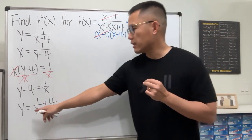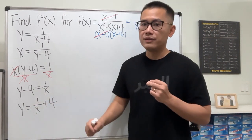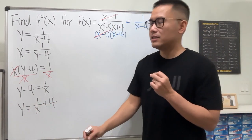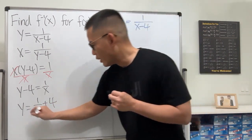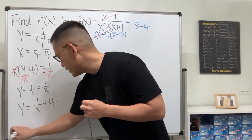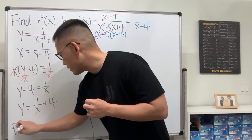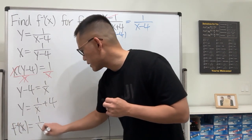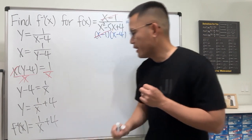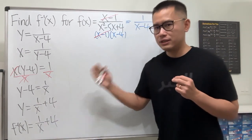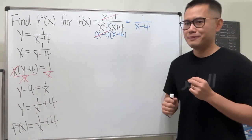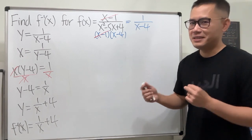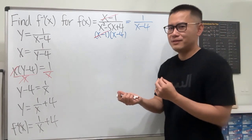Step three is done because we got y by itself. Step four: this y is exactly our inverse, so we write f inverse of x equals 1 over x plus 4, and we are done — right?